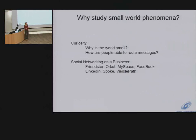So why is this interesting to study? First we'd like to know why is the world small — why are social networks structured this way? And even more interestingly, how are people able to route messages — how do they know exactly which of their acquaintances to pass the message to? Also recently, social networking has kind of bloomed as a business. There are personal websites like Friendster, Orkut, MySpace, and Facebook, and ones designed more for the business professional like LinkedIn, Spoke, and Visible Path. All of them are trying to solve this problem of how to make introductions through a social network.